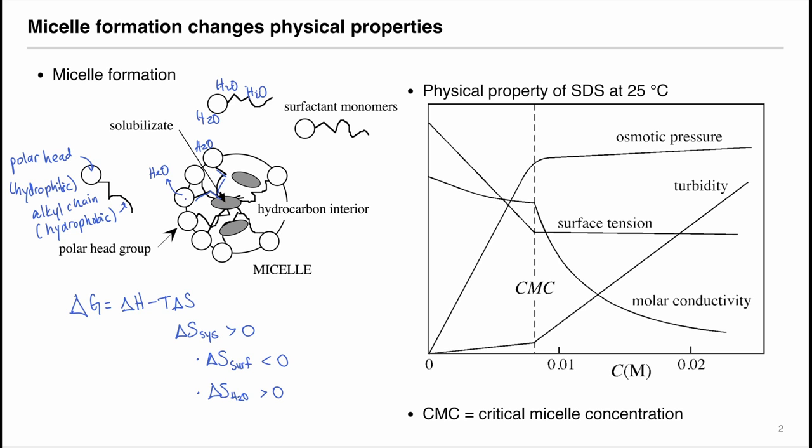So that there are more microstates for the water that is being released. Therefore, the entropy change is greater than zero for water and therefore is greater for the whole system. Because the change in entropy is greater, the delta G is negative and therefore the process is spontaneous.